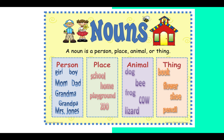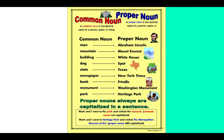Proper nouns like New York City — the N, Y, and C are capitalized. Golden Gate Bridge — the G in Golden, G in Gate, and B in Bridge are capitalized. Titles of books and articles are capitalized: 'Tales of a Fourth Grade Nothing' — the F, G, and N are capitalized. The first word of a quote and the greeting and closing of a friendly letter are also capitalized, like 'Dear Jan' and 'Sincerely.'